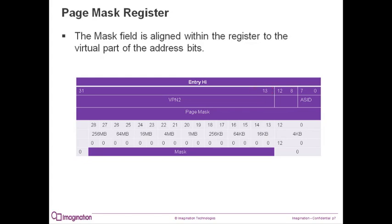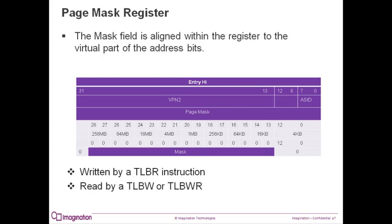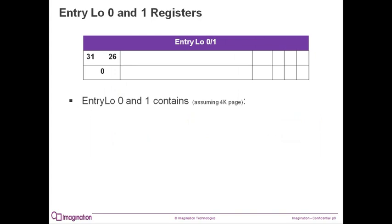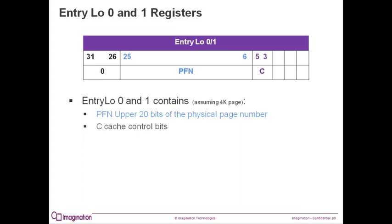The page mask register is filled in when you are reading a TLB instruction using the TLB read instruction. It is read into the TLB entry using the TLB write or TLB write random instructions. This slide shows the default values for a 4K page. This slide shows that setting bits 13 and 14 will cause the page size to increase to 16K. The entry low 0 and 1 registers contain the translation information. They contain the physical frame number, the cache control bits, the dirty bit or write control bit, the valid bit, and the global bit.